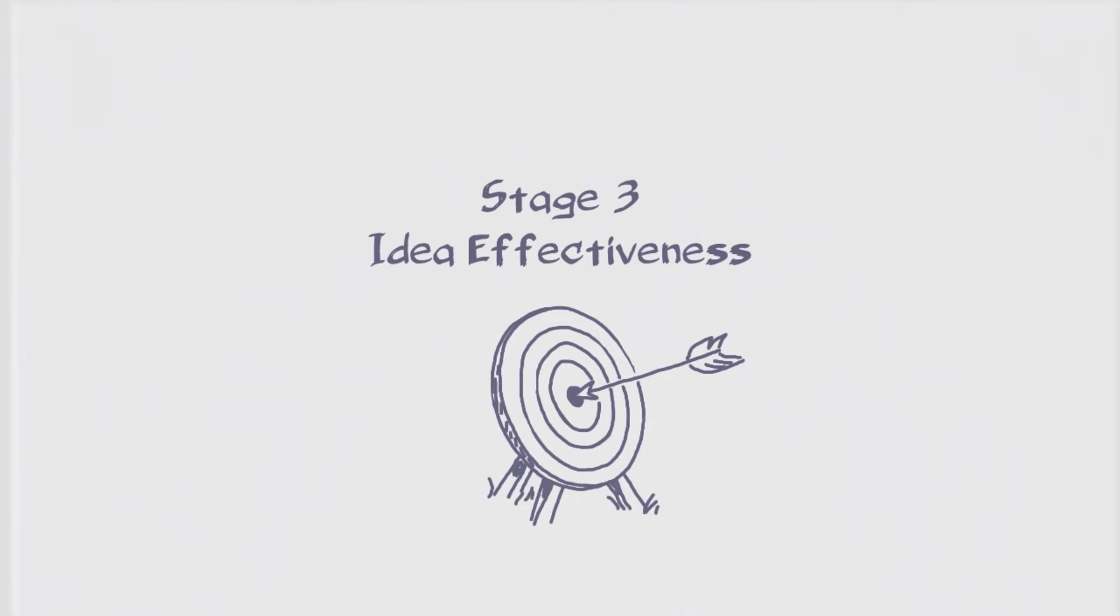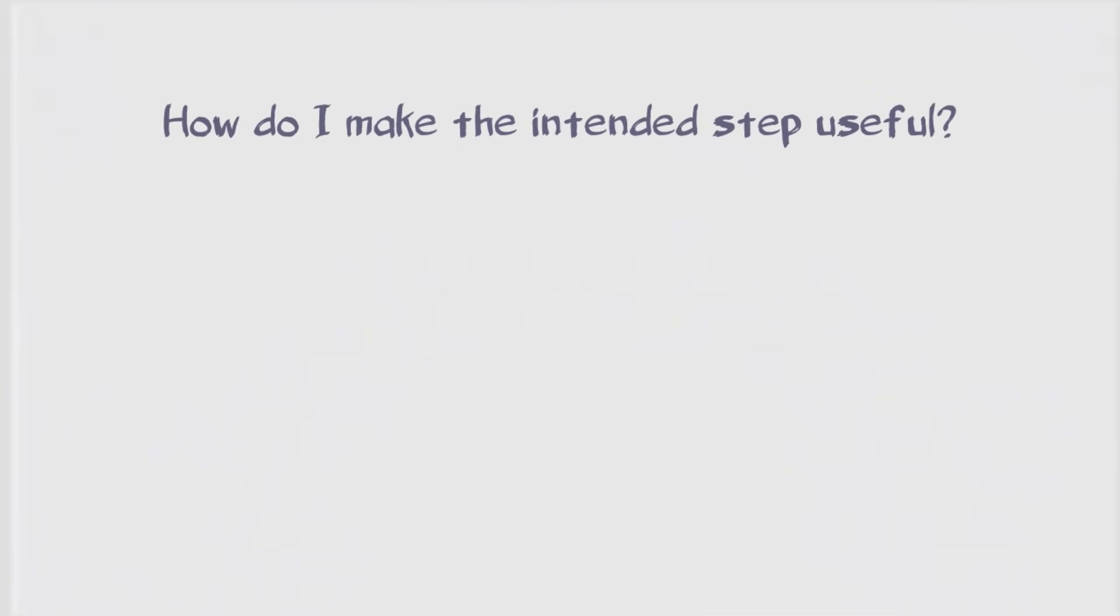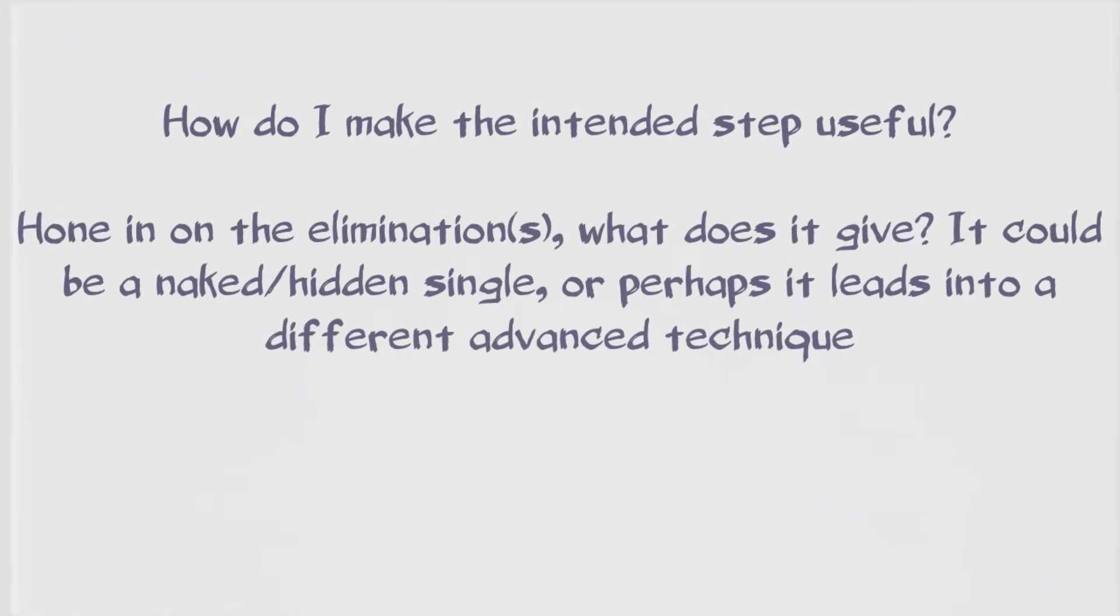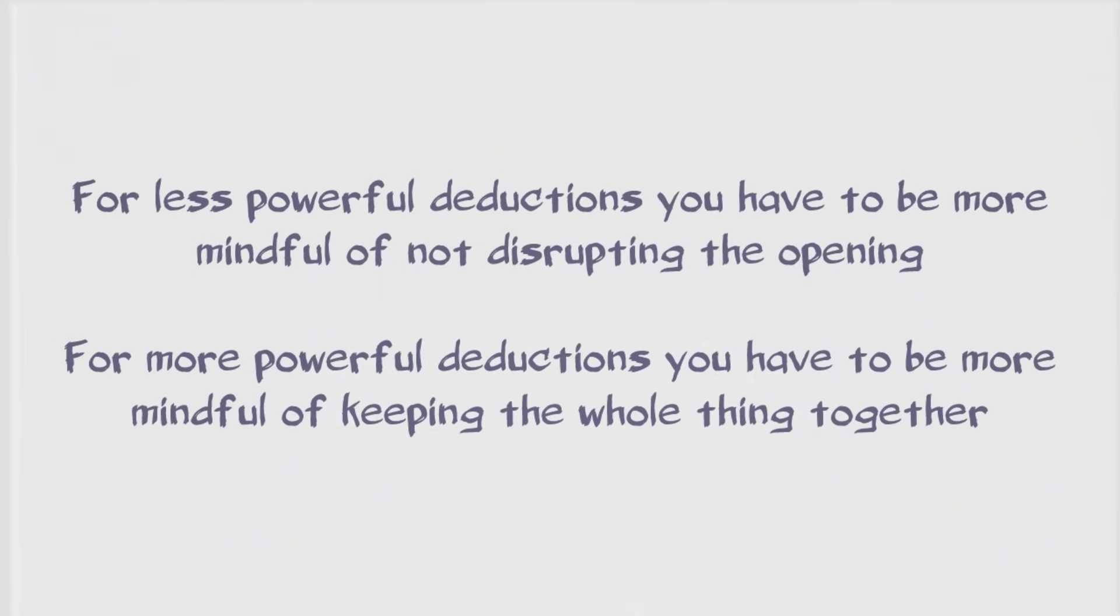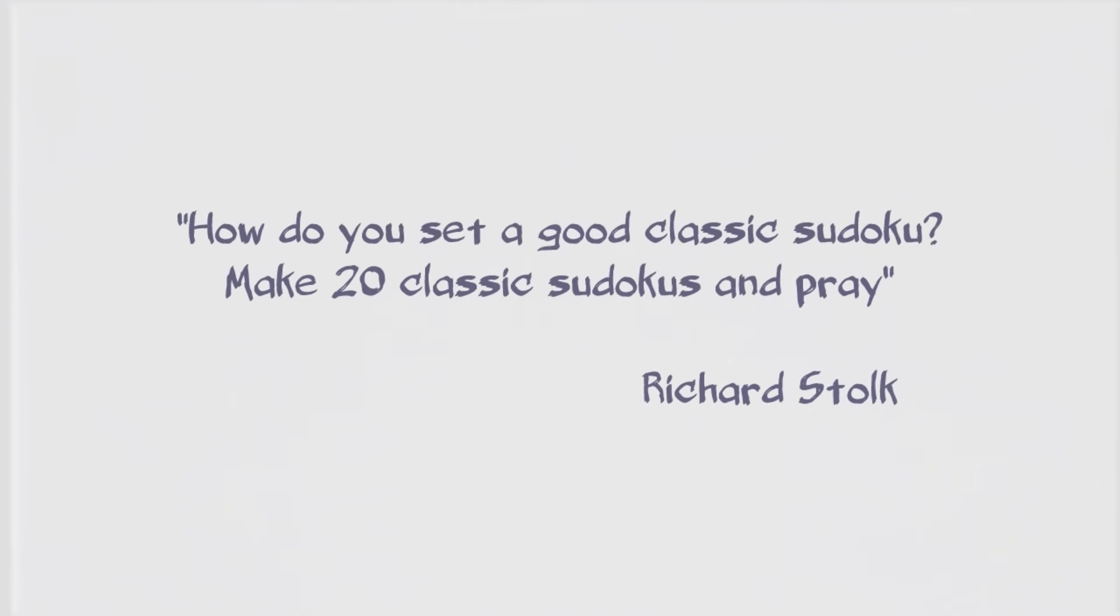Okay, stage 3, idea effectiveness. So when you've managed to get a working setup, the most effective way to make progress is to hone in on what eliminations you get from it, and build off those carefully. For me, I had a few options, because exocets cause so much damage to a puzzle. But even then, because of the complexity of the technique, it's very easy to accidentally open up a simpler path. This stage of the setting process has a lot of trial and error, cross-referencing with more powerful solvers to see full progress, unwinding progress that isn't quite right. It's a bit finicky, and requires you to be clever and efficient with your digit placements.